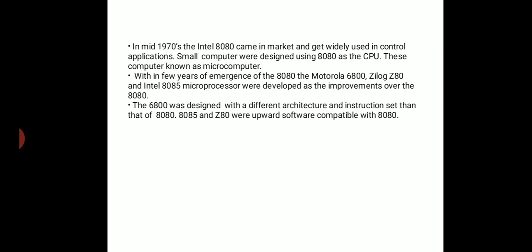After that, many companies entered the market and developed their own microprocessors, such as Motorola 6800, Zilog Z80, and Intel 8085. These were developed as improvements over the 8080. All these companies had the 8080 as their base. The 8085 and Z80 were the first microprocessors software-compatible with the 8080.